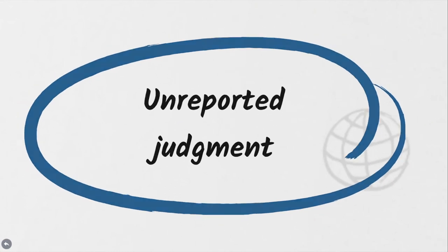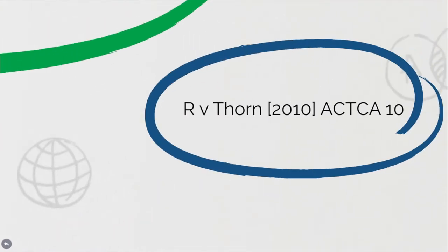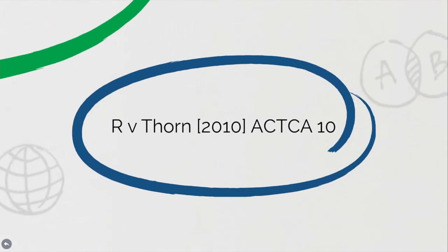All judgements are assigned a medium-neutral citation. Medium-neutral citations are independent of any other citation and do not depend on format or publisher. Unreported judgements will only have a medium-neutral citation. This citation — R v Thorne 2010 ACT CA 10 — is an example of a medium-neutral citation.